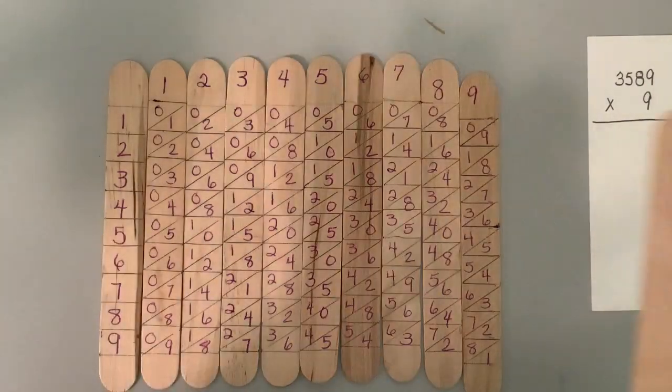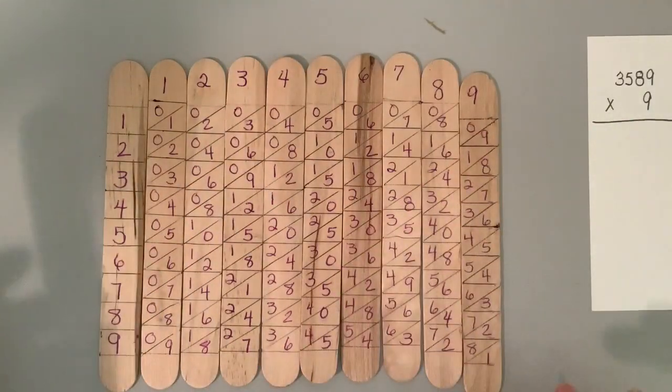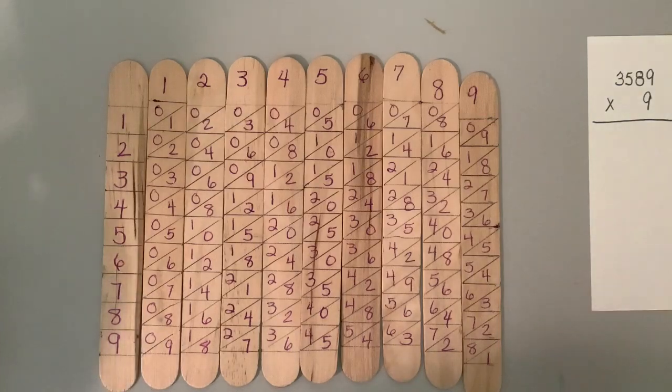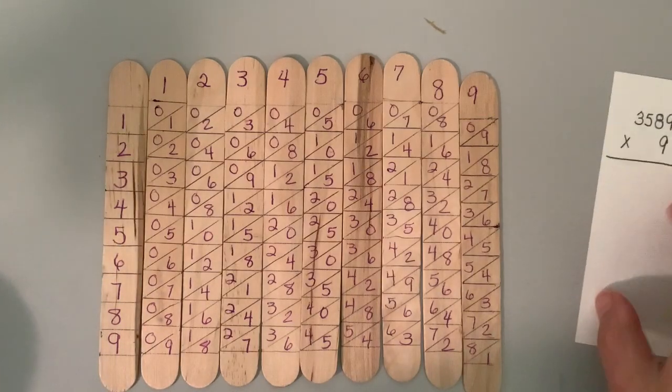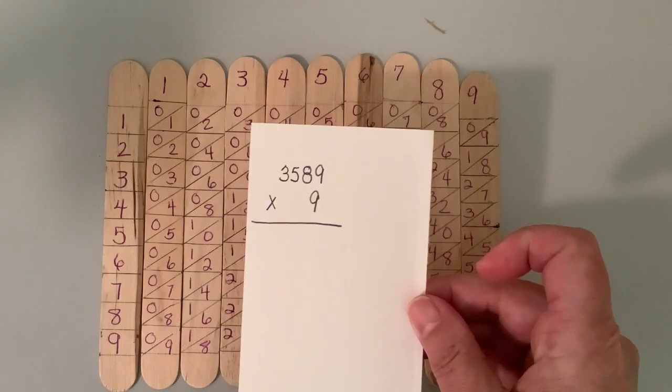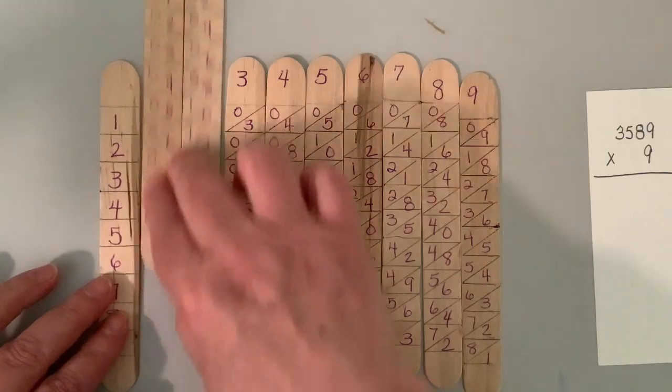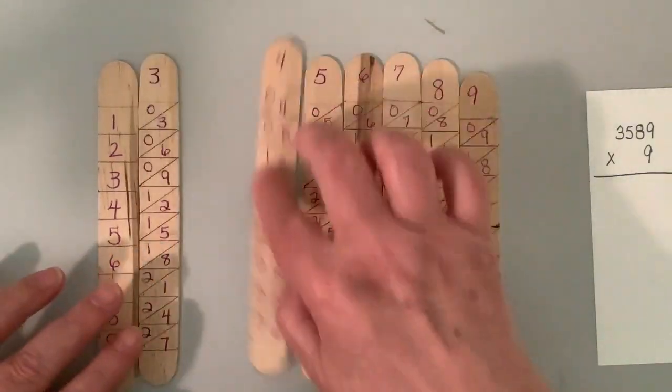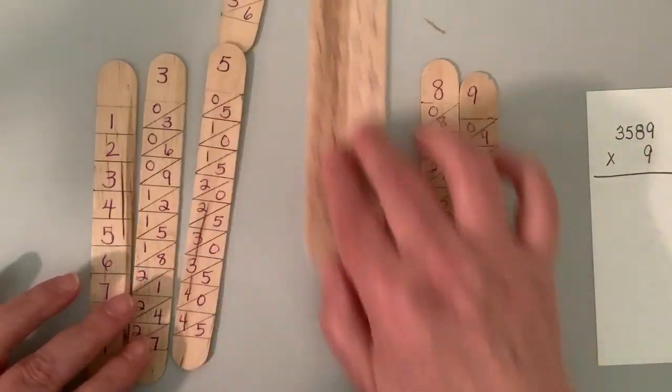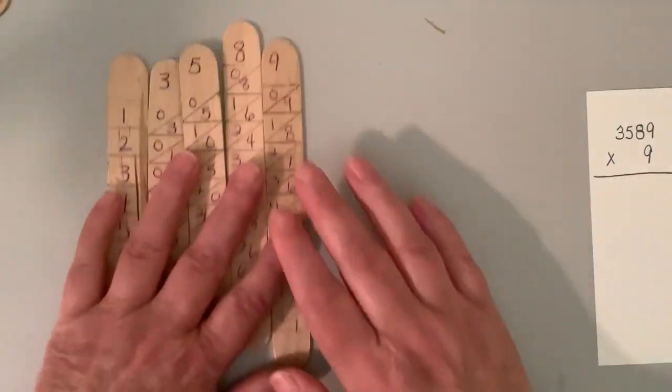So this video, I wanted to show how we carry and maybe do a two digit multiplication problem. So my example multiplication problem is 3,589 times nine. So I need 3,589.